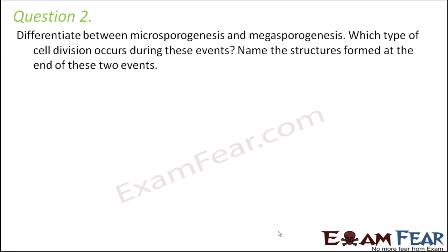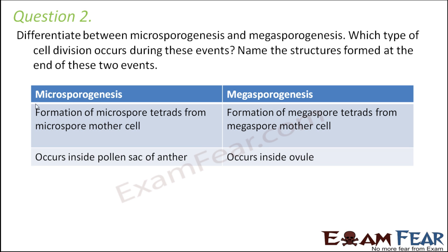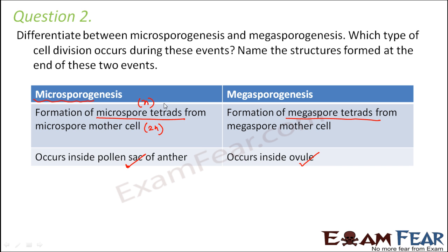Question number 2: Differentiate between microsporogenesis and megasporogenesis. Microsporogenesis is the formation of microspores — a microspore tetrad of 4 microspores is formed from the microspore mother cell. In megasporogenesis, a megaspore tetrad is formed from the megaspore mother cell. Microsporogenesis happens in the male reproductive organ — inside the pollen sac of the anther — whereas megasporogenesis happens inside the ovule. The microspores and megaspores formed are haploid, while the starting material (the mother cells) are diploid, so meiosis takes place.